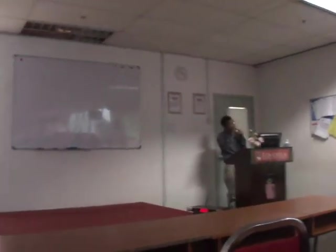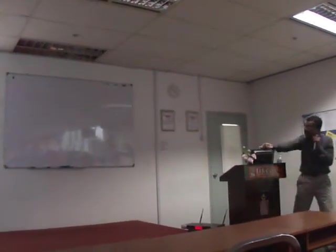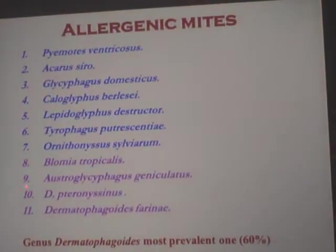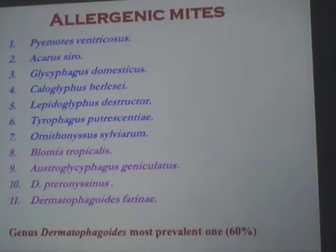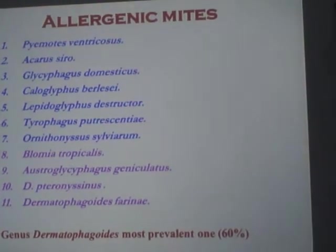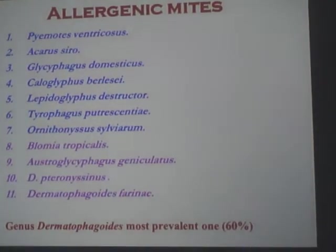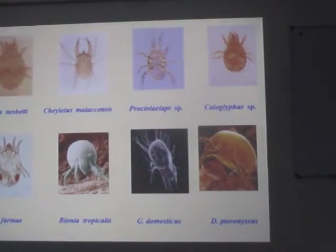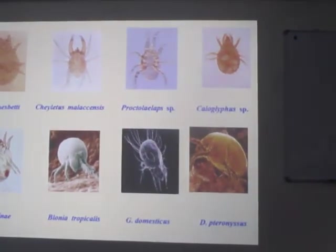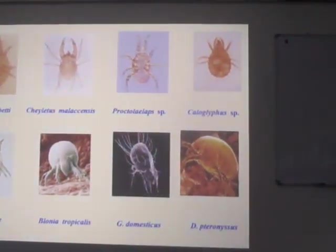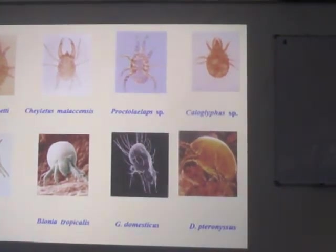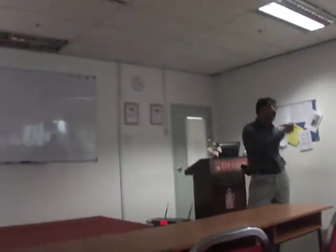Thankfully, of the 30,000 mites identified throughout the globe, only 11 species are allergologically important globally. Among them, four are really creating problems in the Indian context — these are our concern. Among these, two are very important: the group belonging to the genus Dermatophagoides. 'Derm' means human skin scales; 'phagoides' means they feed on — so they feed only on human skin scales, and that's why it is known as Dermatophagoides.